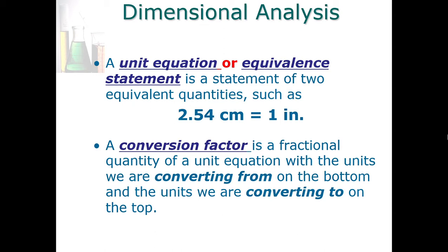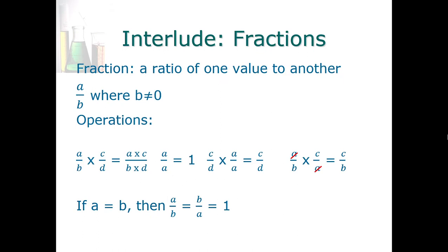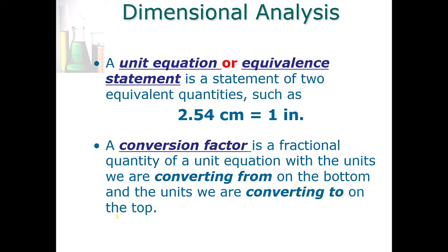To do this we need what is called a unit equation or equivalence statement. It's a statement where you are presented with the equivalence between two quantities — for example, 2.54 centimeters equals one inch. A conversion factor is a fractional quantity of the unit equation with the units we're converting from on the bottom and the units we're converting to on the top. In other words, I want to change that equivalence statement into a fraction by dividing both sides by either one: either 2.54 centimeters over one inch, or one inch over 2.54 centimeters. If a equals b, then a/b equals one or b/a equals one.